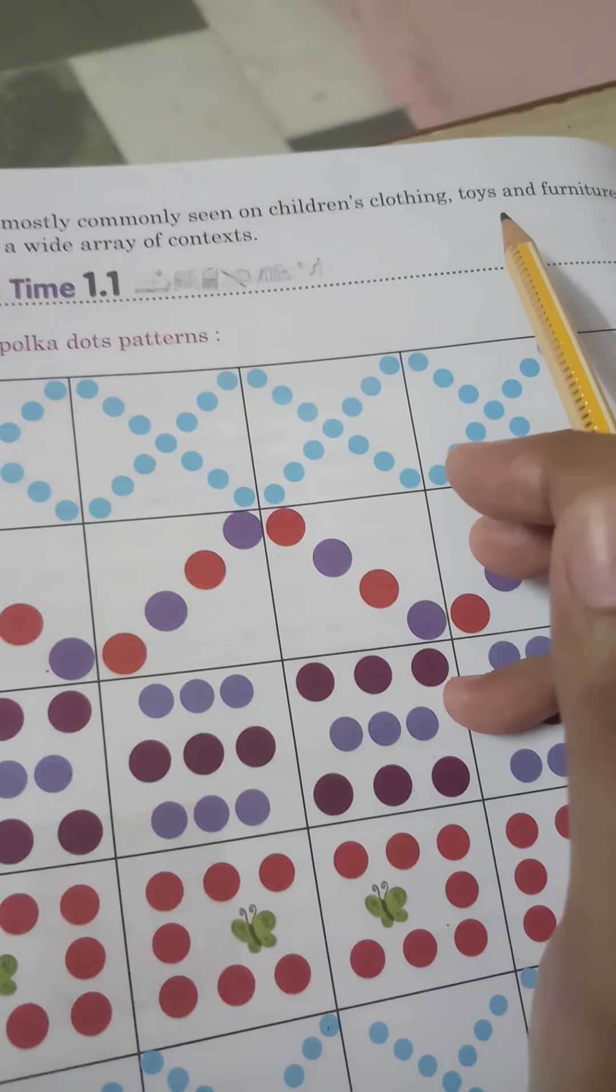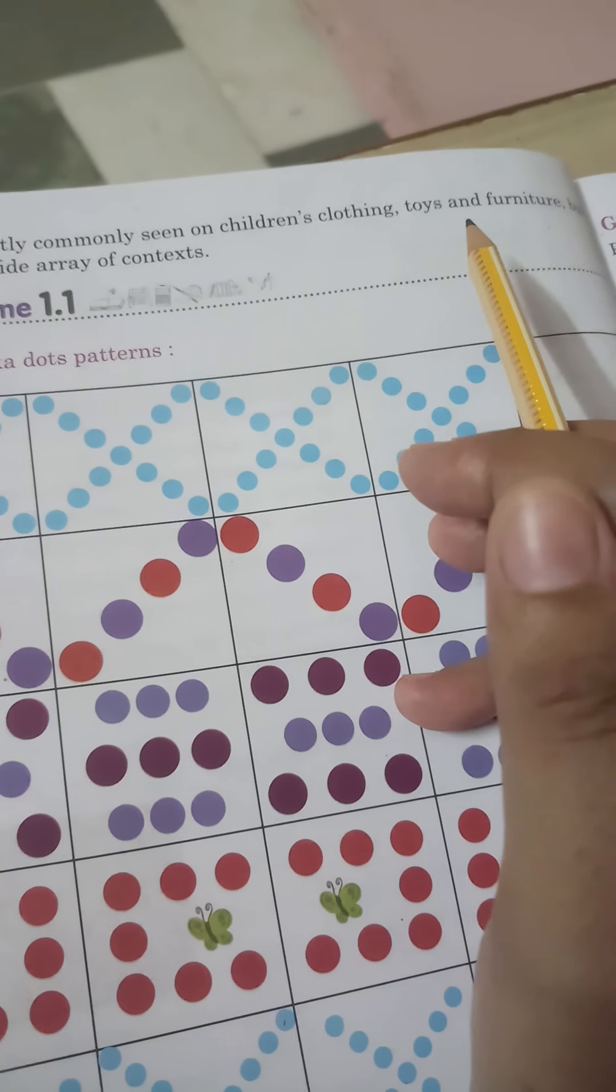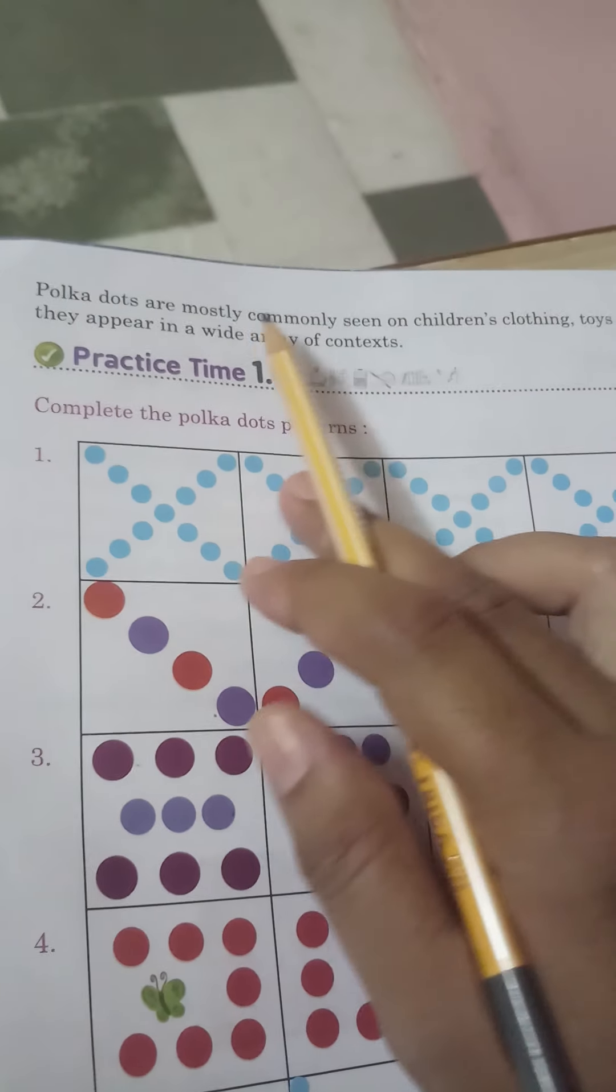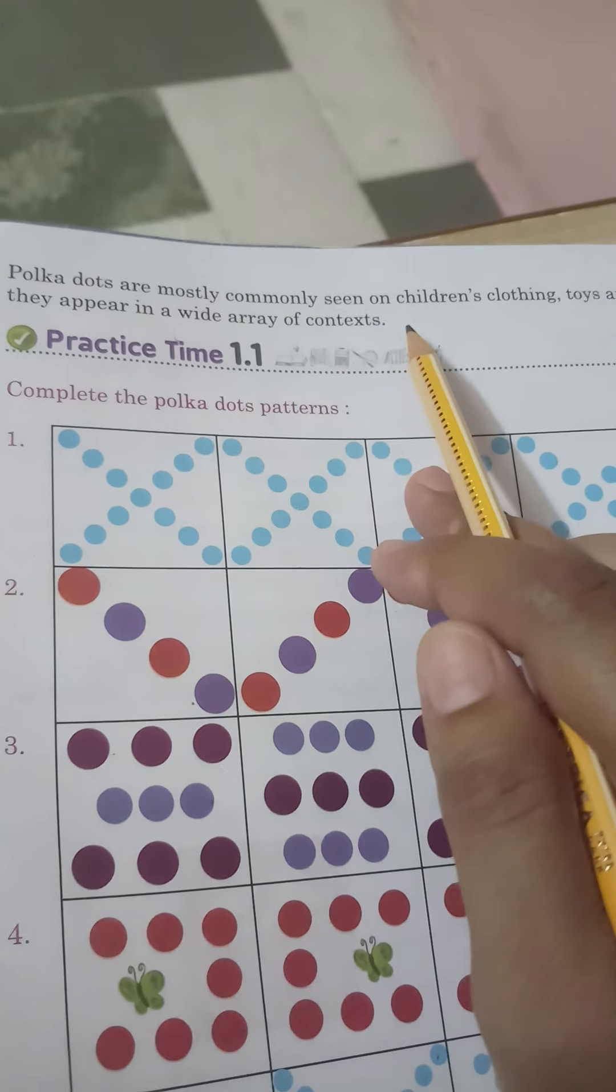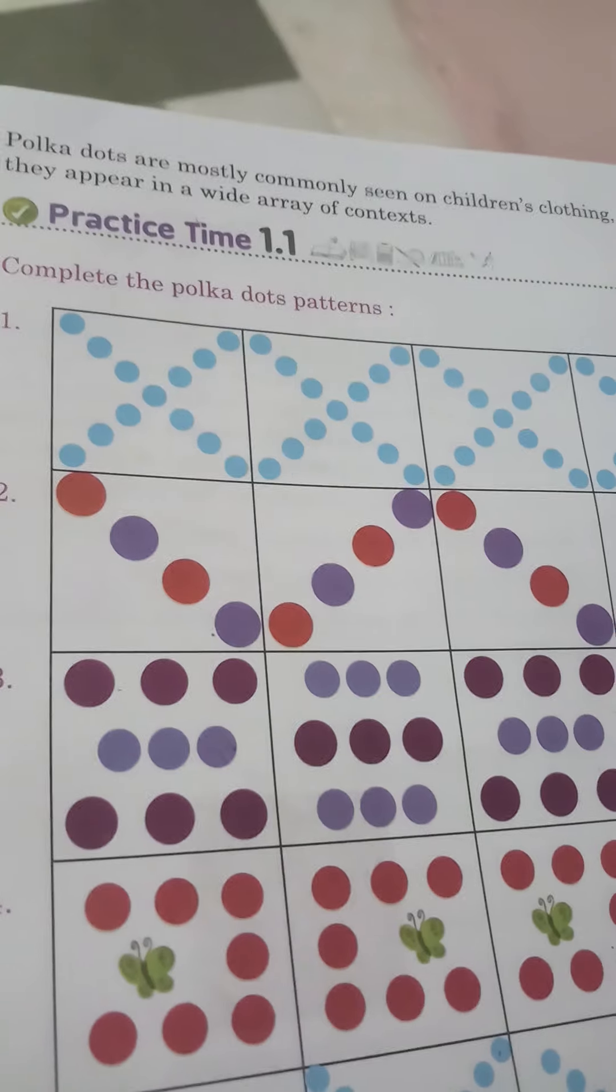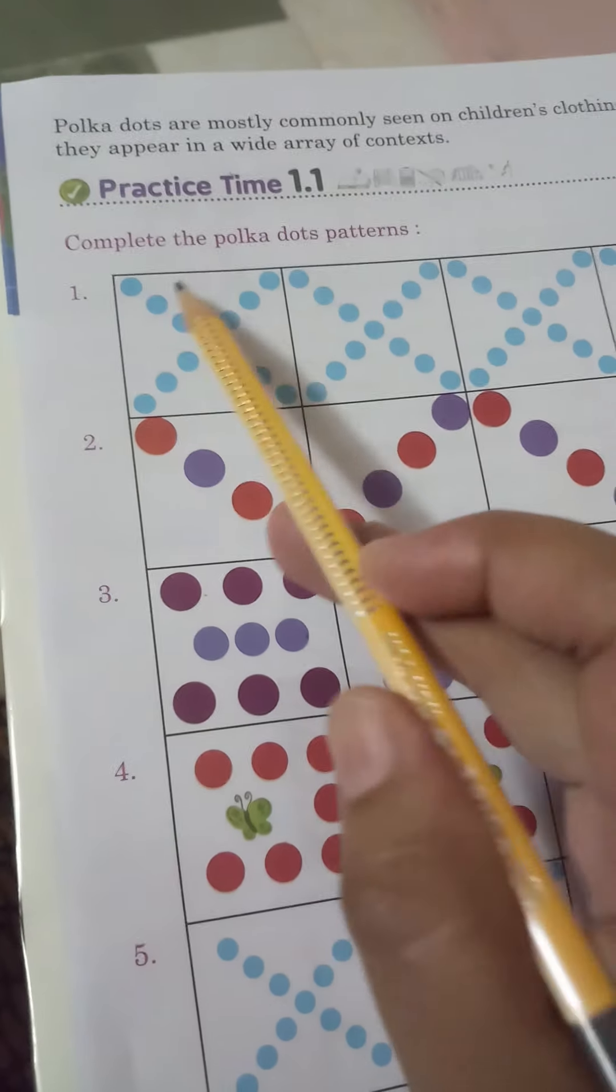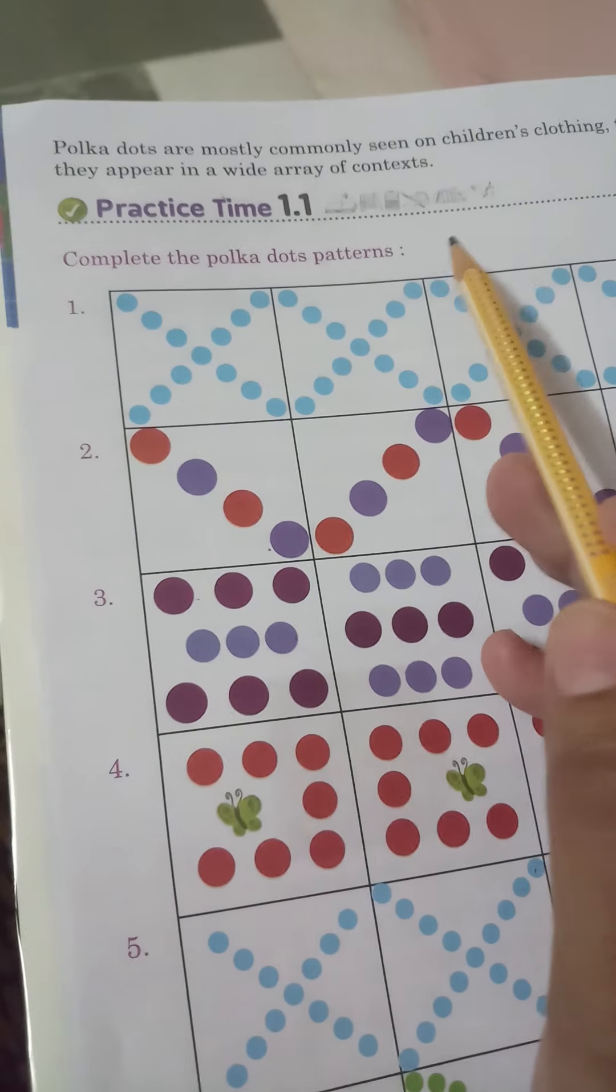Polka dots are most commonly seen on children's clothing, toys, and furniture, but they appear in a wide array of contexts.